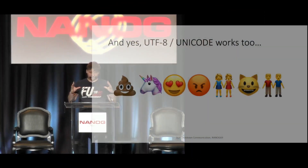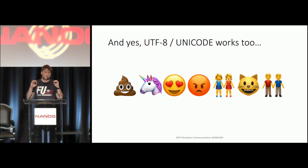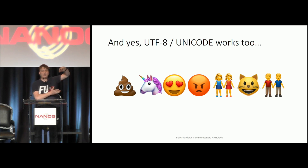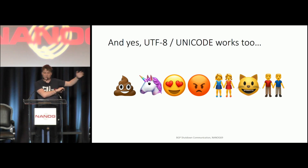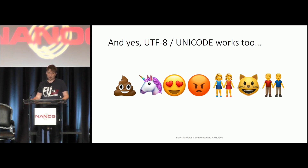The shutdown communication is 128 bytes maximum. This is to prevent visual spoofing, because it would be kind of annoying if half your syslog turned out to be a single shutdown communication message from a malicious actor. By keeping the message short, it will be easier to grok for operations. That's it — are there any questions?